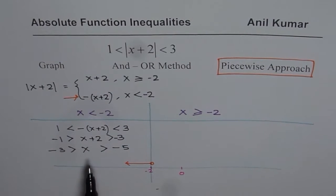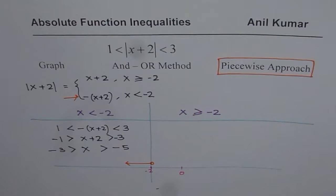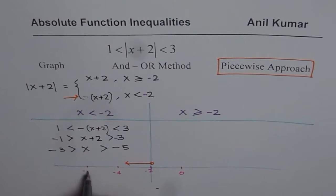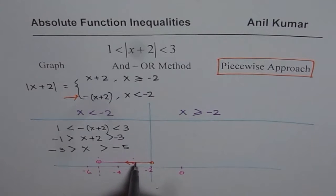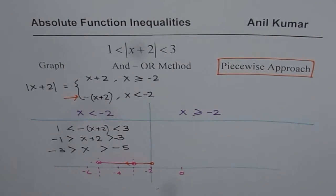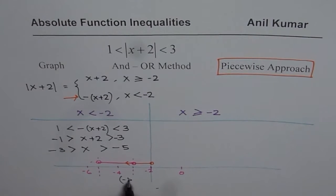We observe that when the domain is less than minus 2, the x value could be between minus 3 and minus 5. On the number line — say this is minus 2, minus 4, and minus 6 — the solution lies between minus 5 and minus 3. This interval does overlap with the domain x less than minus 2, so it becomes part of our solution. We can write this portion as x between minus 5 and minus 3, i.e., the interval from minus 5 to minus 3.